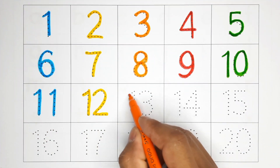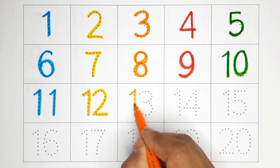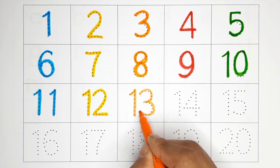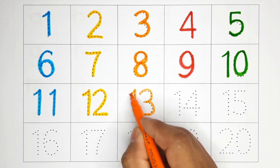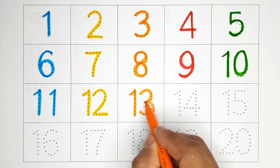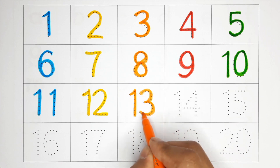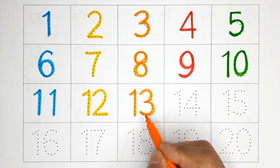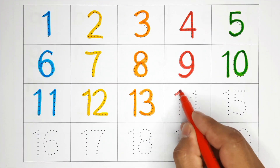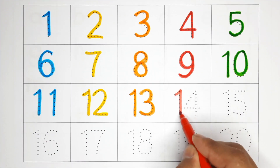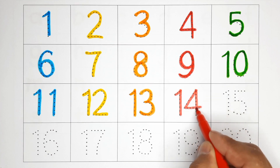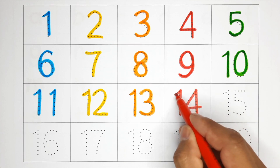Thirteen — one, three — thirteen. Fourteen — one, four — fourteen.